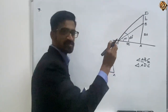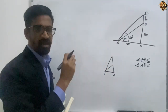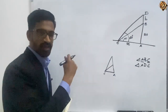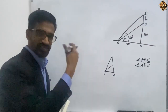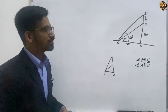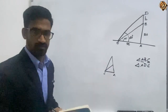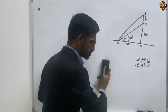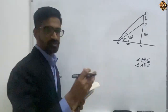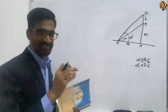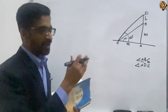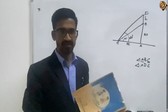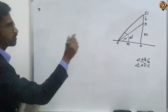Considering AC as a common side, we take it as X. We have to form two equations — equation 1 and equation 2 — and by equating them it will be easy to find the value of X. So wherever there are two triangles, the first step is to find the common side and take it as X, then find two equations using X.